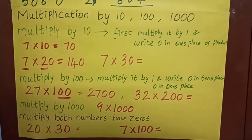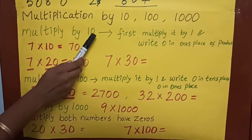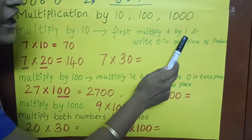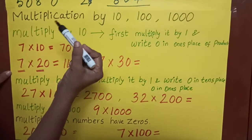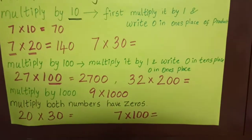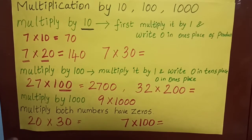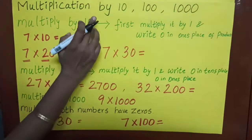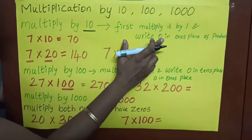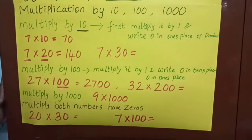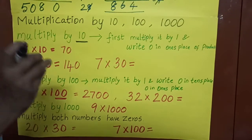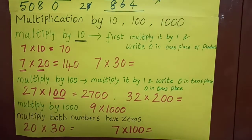If I am multiplying one number by 10, first what I have to do? I have to first multiply it by 1. Whatever the bigger number, if I am multiplying by 10, first I have to multiply with 1. Take the zero off, multiply with 1, then write zero in the one's place. That's all — such an easy one.